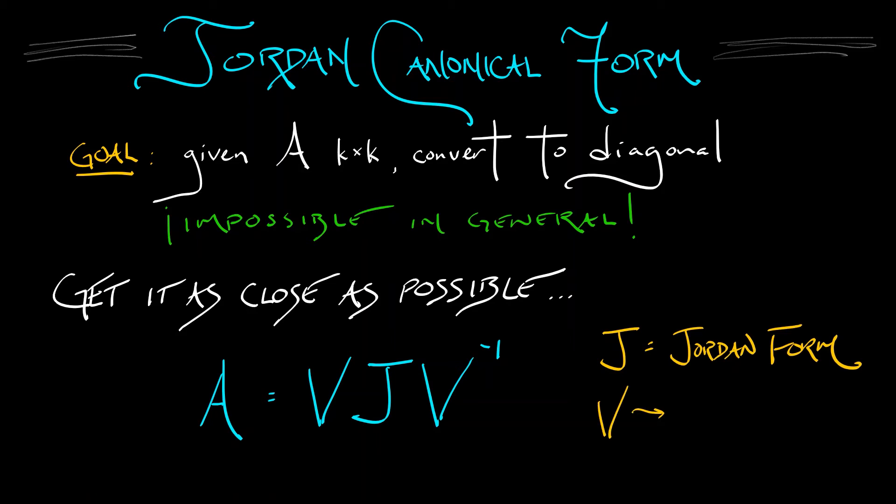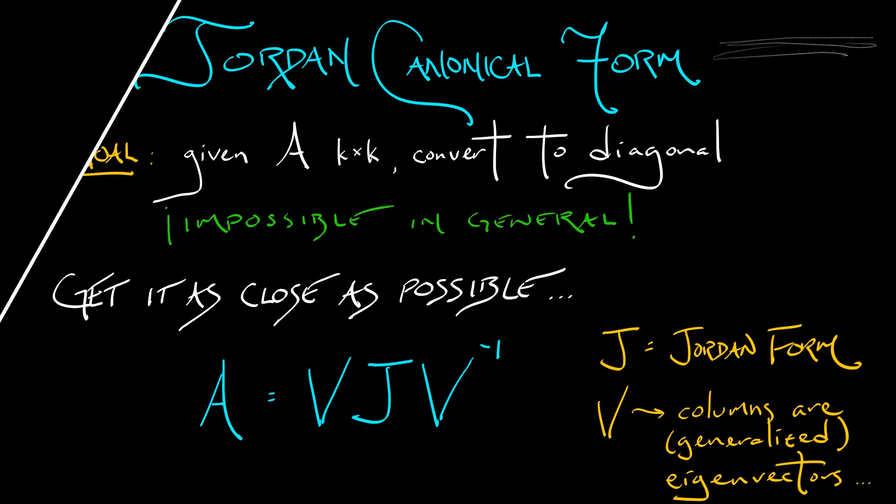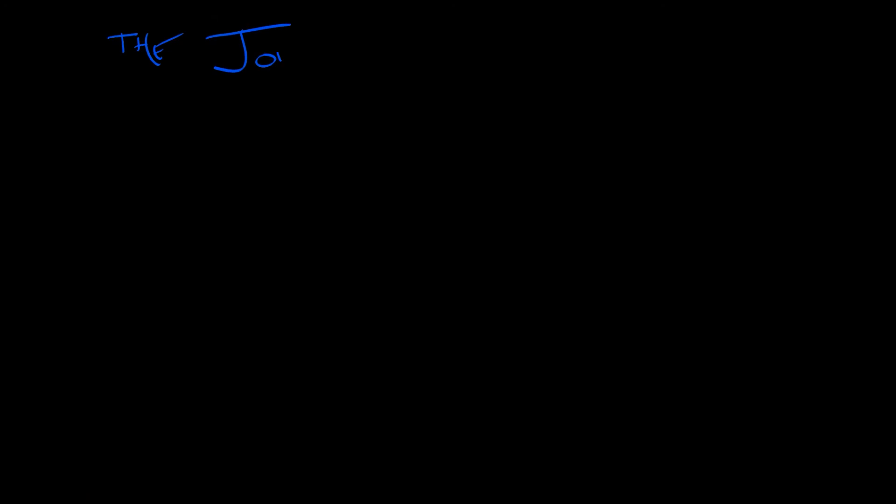V is a coordinate change matrix whose columns are generalized eigenvectors of A. For the most part, we're going to ignore matrix V and how to compute it, and focus on matrix J, the Jordan form. Here's the idea.